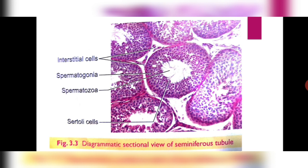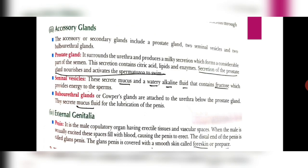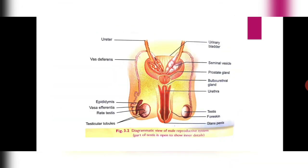This is the diagram showing a sectional view of the seminiferous tubule. You can clearly see the spermatogonia cells leading to the formation of spermatozoa, and there are sertoli cells which provide nutrition to the developing spermatozoa. There are also interstitial or Leydig cells responsible for the secretion of testosterone. This is the diagrammatic view of the male reproductive system, where the testes and testicular lobules are visible.